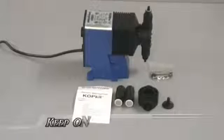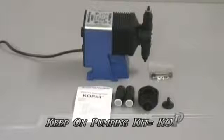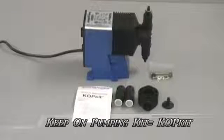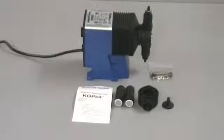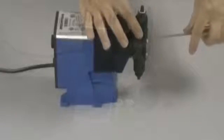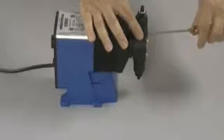Pulsatron keep on pumping kits or cop kits for short, include the most common items for preventative maintenance. However, other system components such as suction and discharge tubing and all fittings should be checked for potential problems. The first step in replacing the cop kit is to remove the wet end.